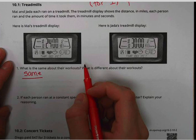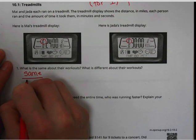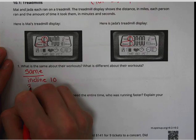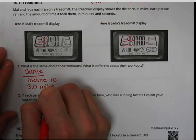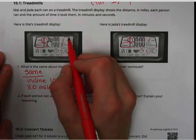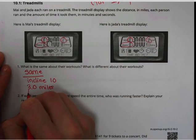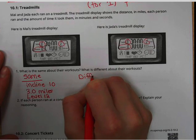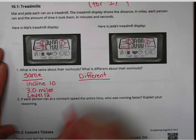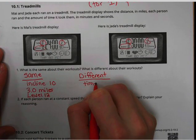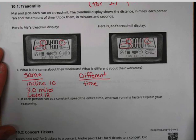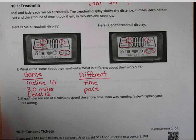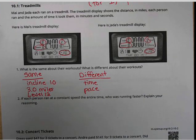A couple things that are the same here: they both have an incline of 10, they both ran 3.0 miles, looks like they were both on level 12. There might be some more, but we're just going to name a few. And then a few items that were different: obviously they have different times—one is 24 minutes and one is 30 minutes. Right here in this circle, these are different. This is their pace, so that's how long it takes them to run one mile. And their calories are different.